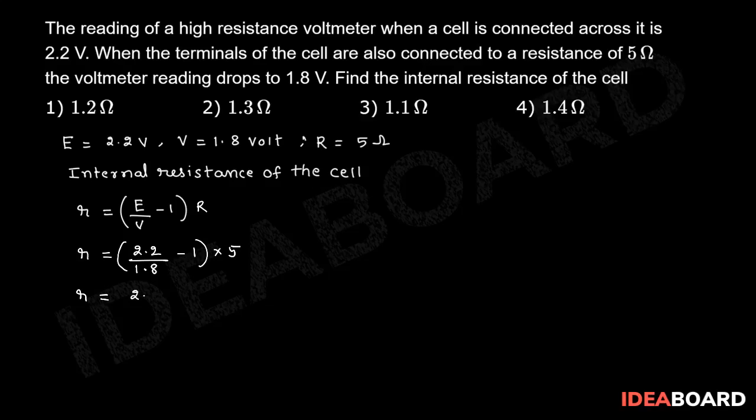r equals (2.2 - 1.8)/1.8 × 5, which becomes 0.4/1.8 × 5. After simplification, this equals 1.1 ohms. Therefore, internal resistance is equal to 1.1 ohms. So the third option is the right option.